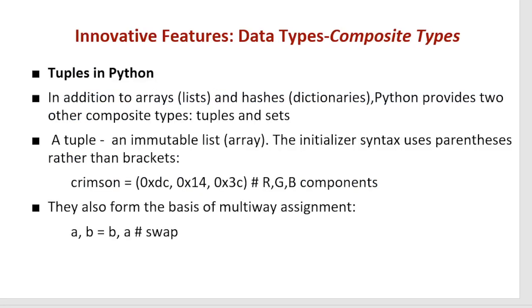Tuples in Python: in addition to arrays, lists, and hashes (dictionaries), Python provides two other composite types — tuples and sets. Tuples are immutable lists. The initialization syntax uses parentheses rather than brackets. The RGB components are separated within parentheses. Tuples also form the basis of multi-way assignment. For example, 'a, b = b, a' performs a swap — a multi-way swap where b's value is assigned to a and a's value is assigned to b.